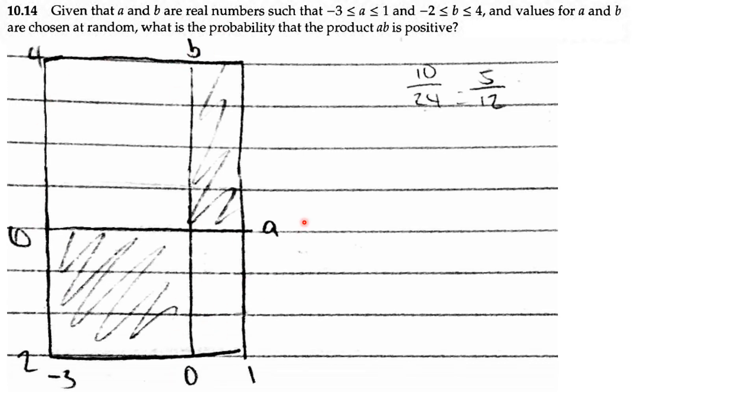If we want the probability of the product of A and B being positive, that means A and B have to be both greater than 0 or both less than 0. It has to be one of these two regions. So we calculate the area of these two regions: this is 4, 2, 0, 1. And we get 10/24, which is 5/12.